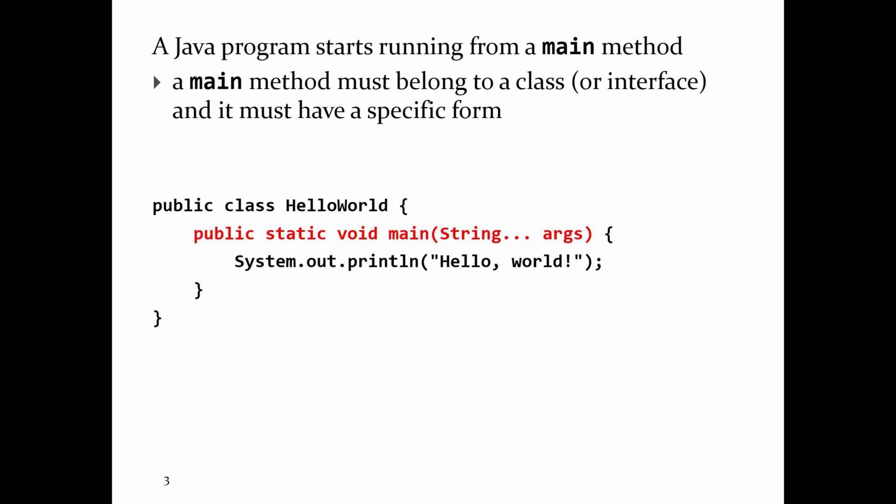One of the criticisms of Java is that this isn't true. In order to produce the hello world program in Java, you have to do a fair bit more work. There's a whole bunch of stuff you have to write because the language requires it just to print out a string to the terminal. The equivalent program in Java looks as follows. When you run a Python script, the script starts to run from top to bottom, the order in which you started running things, unless it has a main function.